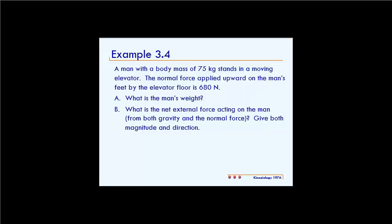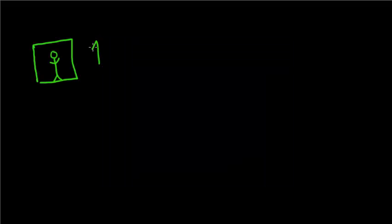We're going to start with a free body diagram. We have a normal force upward, which we're going to consider positive, and we have a weight downward, which we're going to consider negative. His normal force, as we know, is given to us, which is 680 newtons.